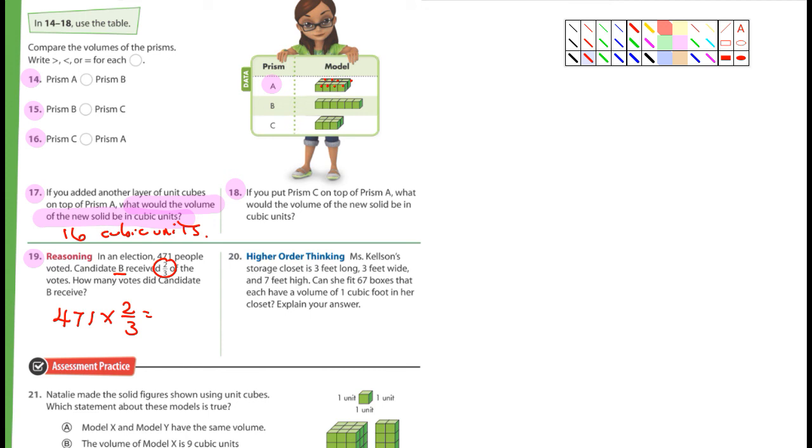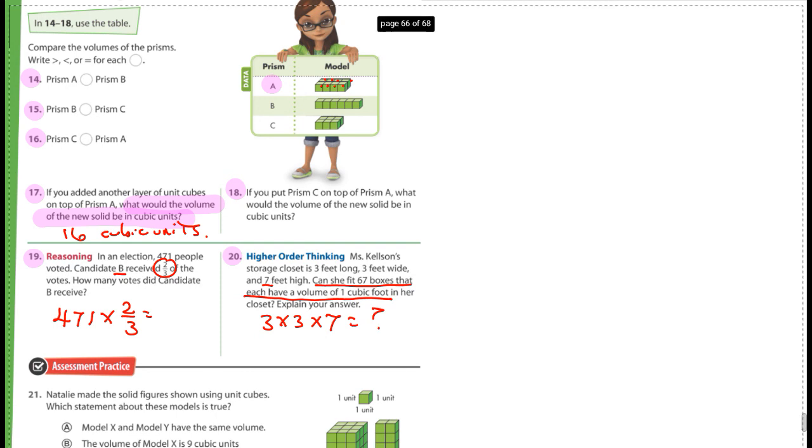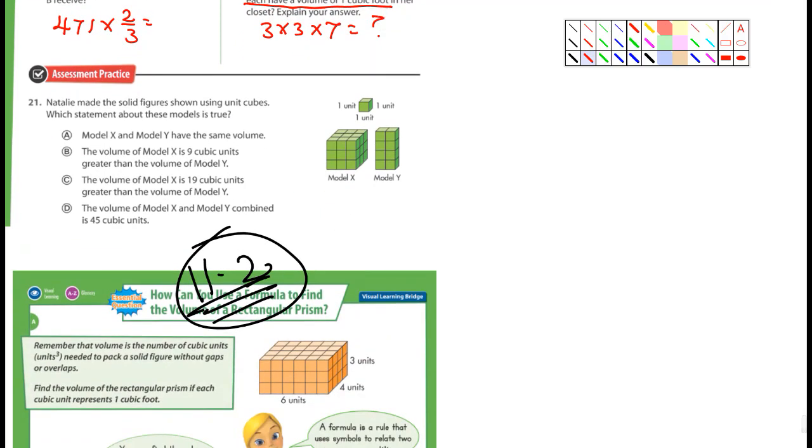And number 20 here I want you to do. Ms. Kellison's storage closet is three feet long, seven feet high, and she can fit 67. Can she fit 67 boxes that each have a volume of one cubic foot in her closet? So it's going to be three times three times what? Seven. Seven equals something. So answer that question. Number 21? Yeah, 21 you guys can do. All right, let's jump into 11-2.